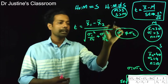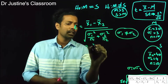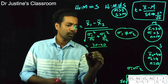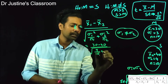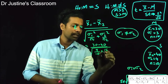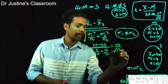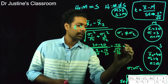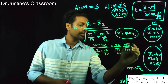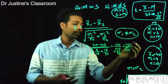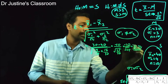Using the unequal variance equation with our values: t = (30 - 40) / √(9/10 + 16/10) = -10 / √2.5. The calculated t-value is approximately -6.34.